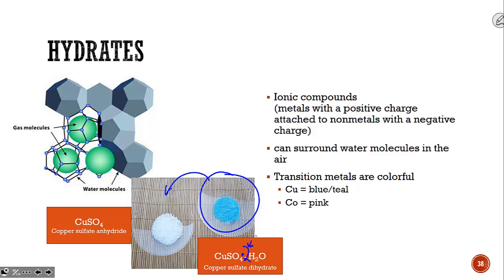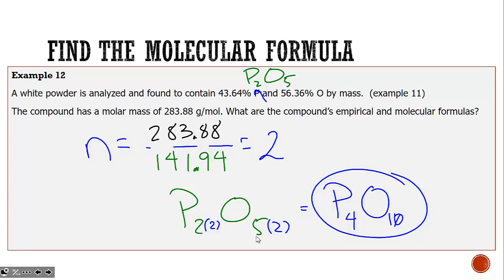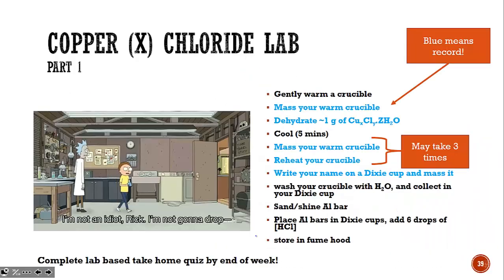We will end today by doing a lab where I'm giving you a copper chloride compound. Copper chloride is fairly hydrophilic. It will pull water into it. Your job today is to get all of the water out and then react it with aluminum to pull the copper out. Because later, we will figure out what the exact formula of our copper chloride is.